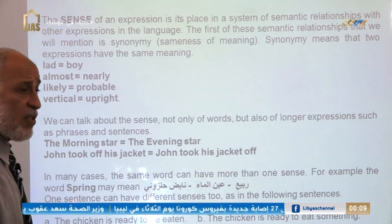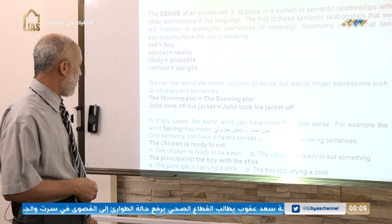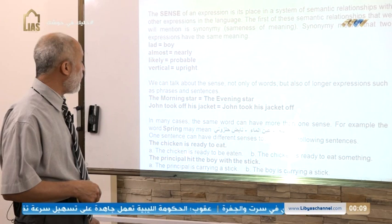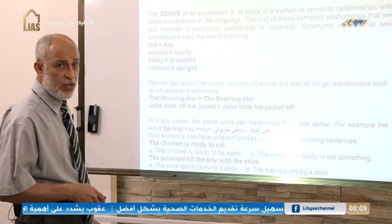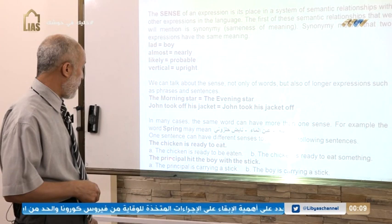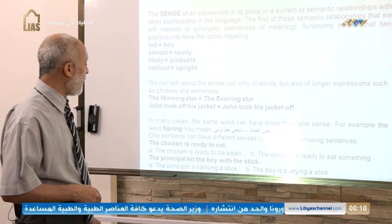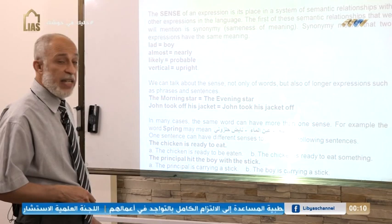Consider the following example: 'The chicken is ready to eat.' This sentence can be interpreted in two different ways. The first interpretation: the chicken is ready to be eaten. The second interpretation: the chicken itself is hungry and is ready to eat something. Another example: 'The principal hit the boy with the stick.' This sentence can also be interpreted in two ways. The first: the principal is carrying a stick and hit the boy. The second: the boy is carrying a stick and the principal hit him, perhaps with his hand.